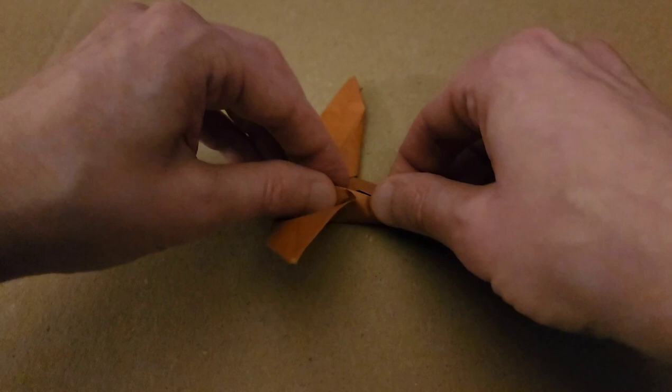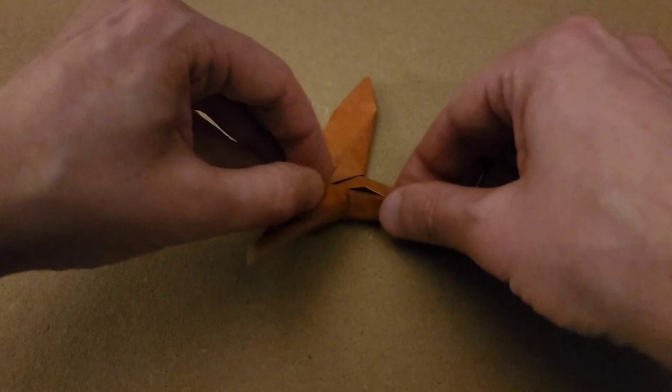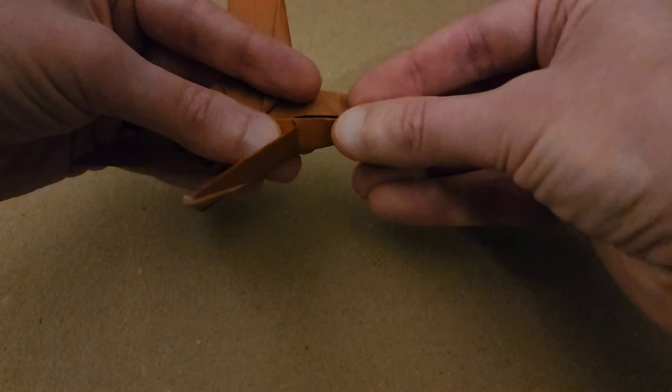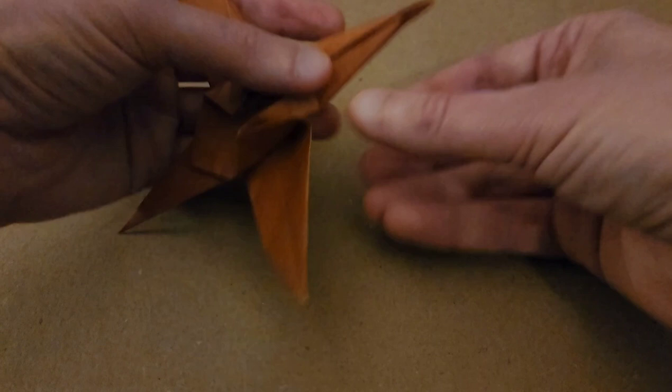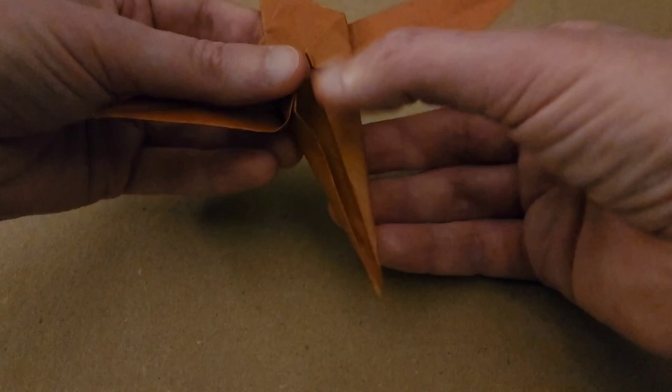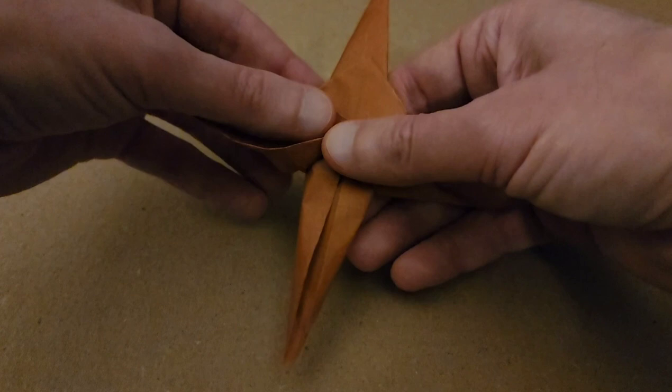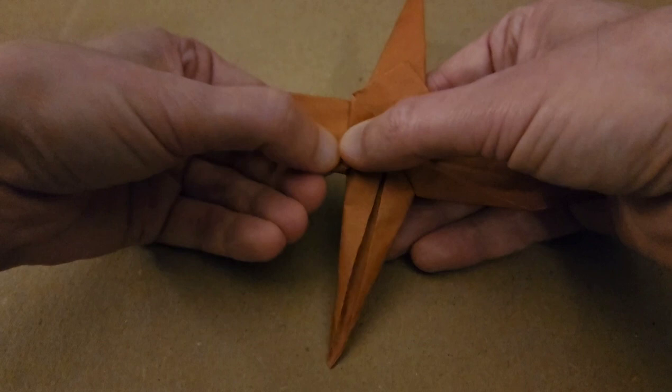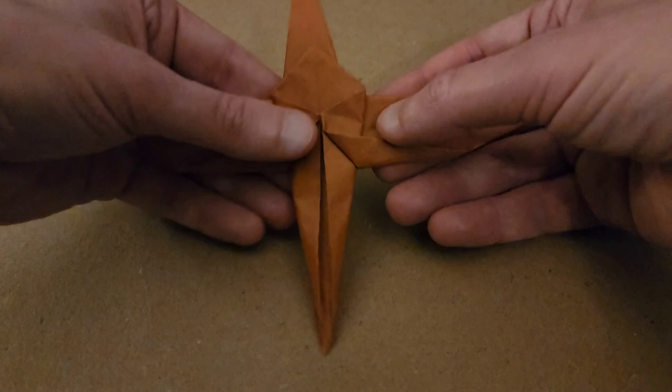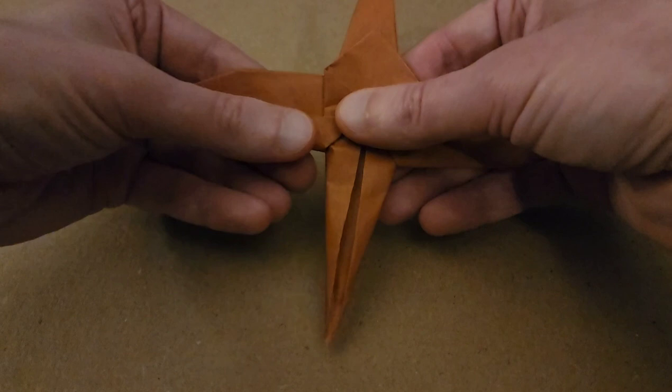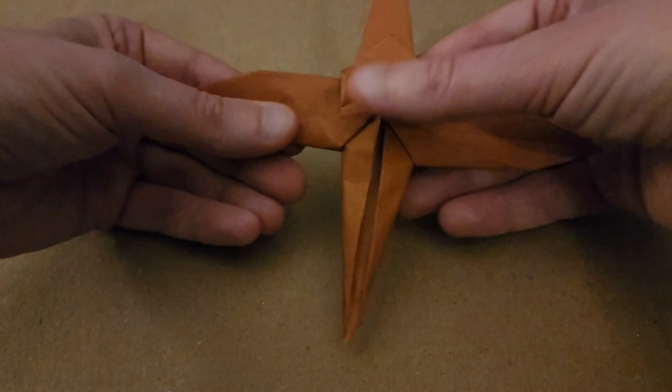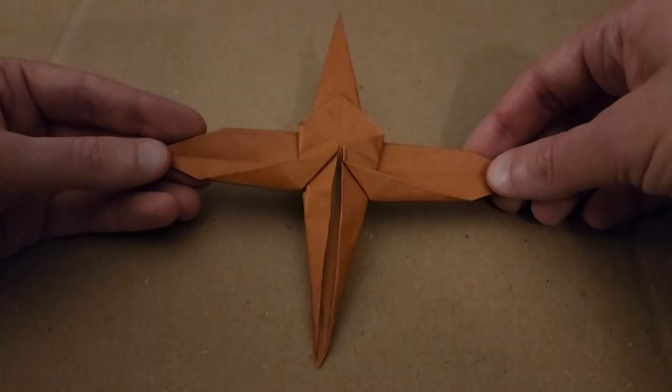And then, we'll do the other side. Almost there. And then flatten. See, almost symmetrical. I mean it is organic so. All right and then just crease out those wings, make them nice and flat. And believe it or not we are in the home stretch.